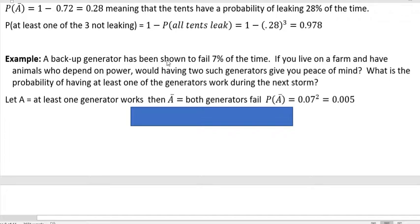A backup generator has been shown to fail seven percent of the time. If you live on a farm and have animals who depend on power, would having two such generators give you peace of mind? And what I'm assuming is that one wouldn't. If you think seven percent of the time it might fail, maybe one wouldn't be. But if you bought two generators, would that give you peace of mind? What is the probability of having at least one of the generators work during the next storm?